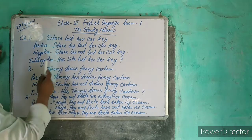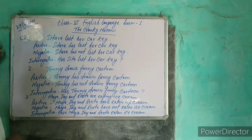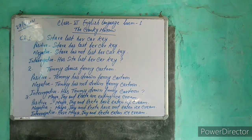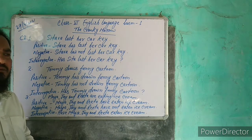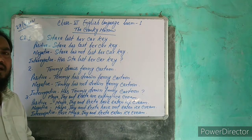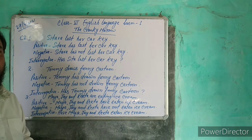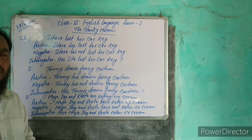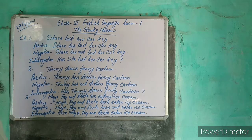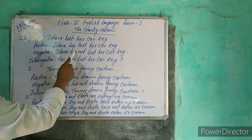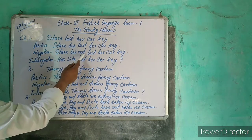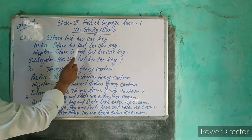For the negative sentence, we place 'has not' or 'have not' after the subject. For example: 'has not' — this forms our negative sentence structure.